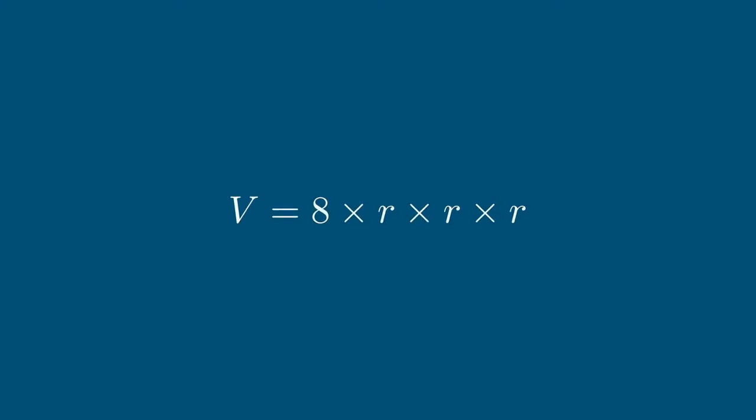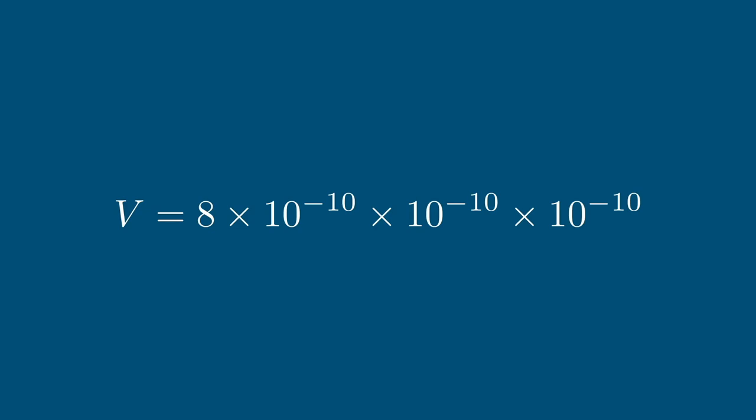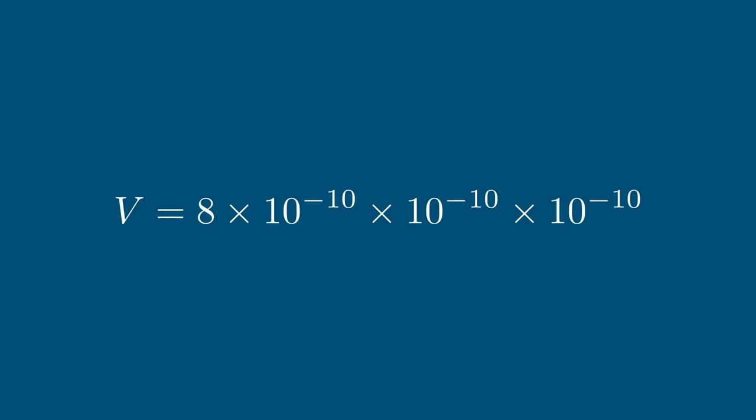Back to our problem: the volume of an atom. We apply the same cube approximation we used for the Earth. Volume is 8 times the radius cubed. The radius is 10 to the power of minus 10, so we have 8 divided by 10 ten times, then again, then again — dividing by 10 a total of 30 times. Combining the powers gives us 8 times 10 to the power of minus 30 cubic meters — a really tiny volume for the atom.